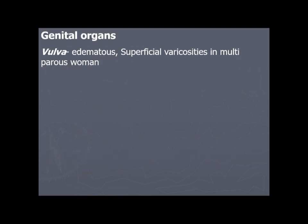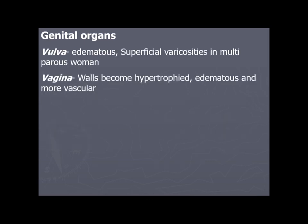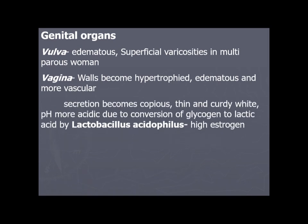Physiological changes in genital organs: the vulva becomes edematous with superficial varicosities in multiparous women. The vaginal wall becomes hypertrophied, edematous, and more vascular. Secretions become copious, thin, and curdy white. The pH is more acidic due to conversion of glycogen to lactic acid by Lactobacillus acidophilus, owing to the high estrogen level. This acidic pH prevents multiplication of microorganisms.